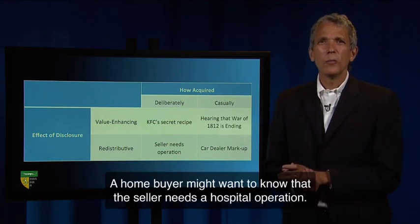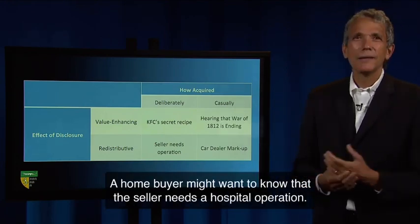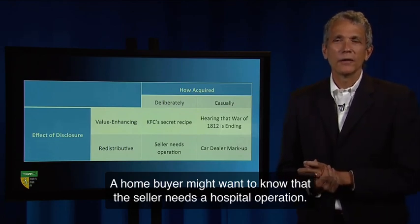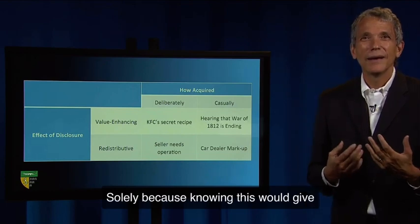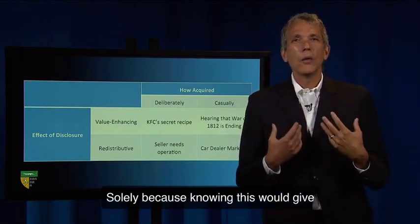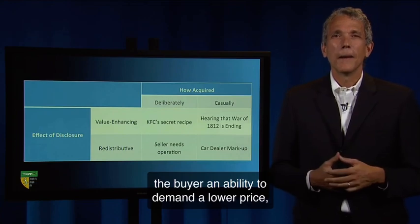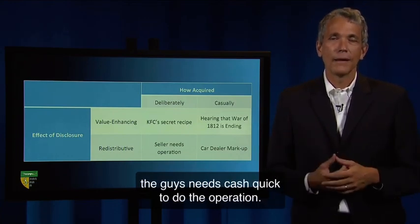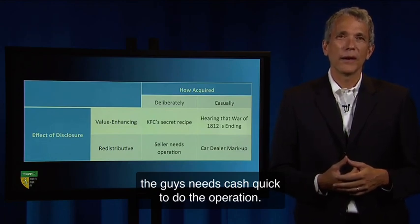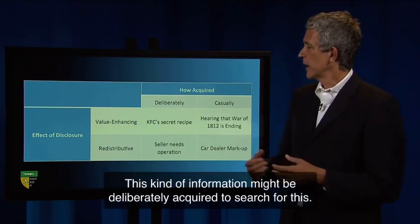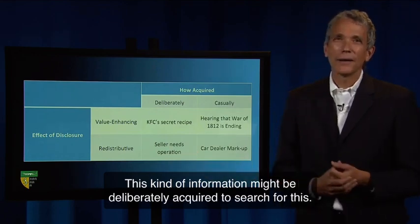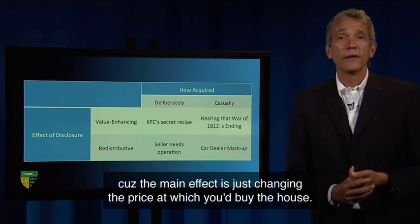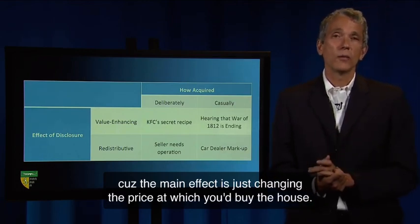A home buyer might want to know that the seller needs a hospital operation solely because knowing this would give the buyer an ability to demand a lower price. The guy needs cash quick to do the operation. This kind of information might be deliberately acquired, but it would be redistributive because its main effect is just changing the price at which you'd buy the house.